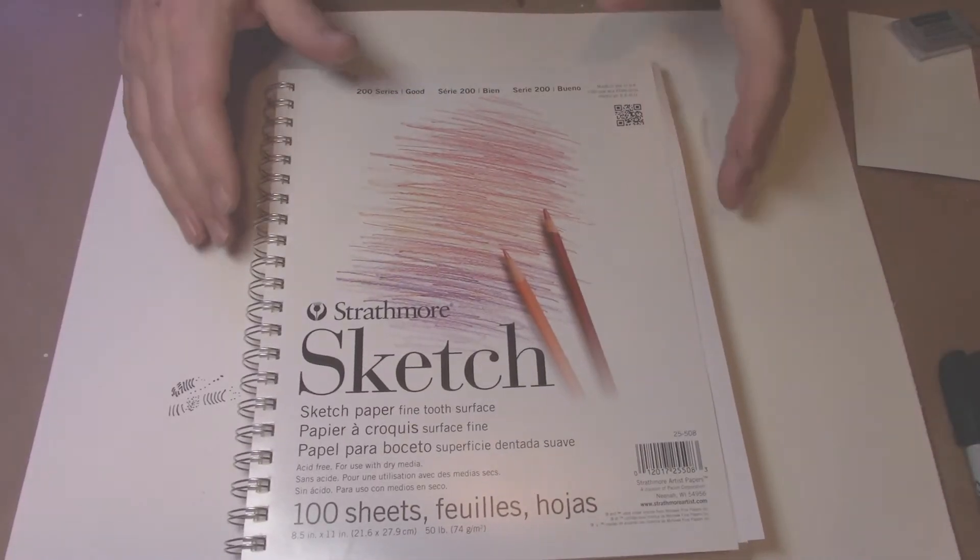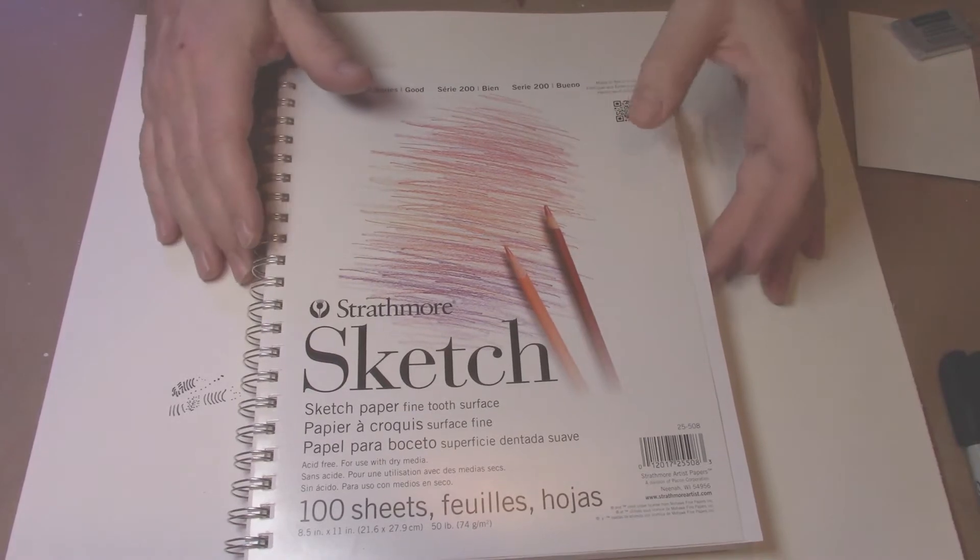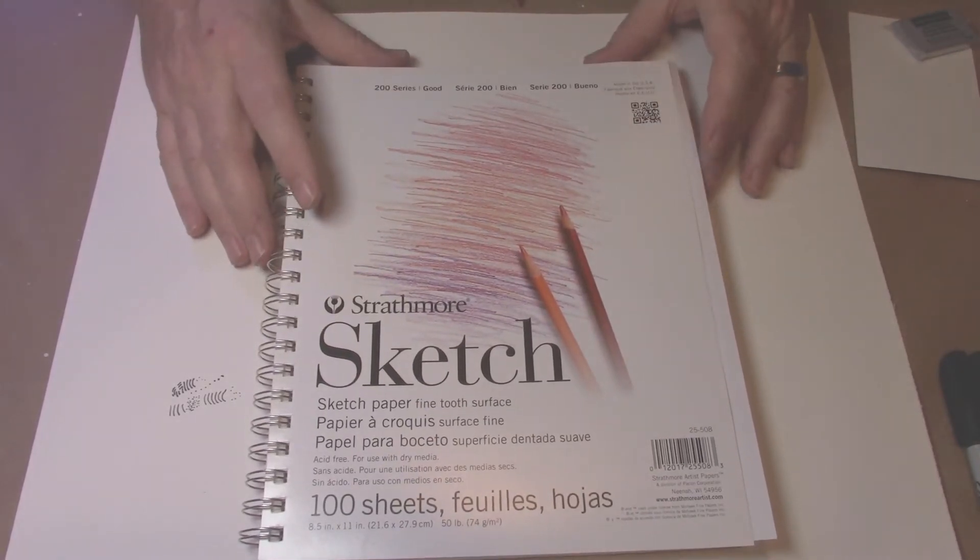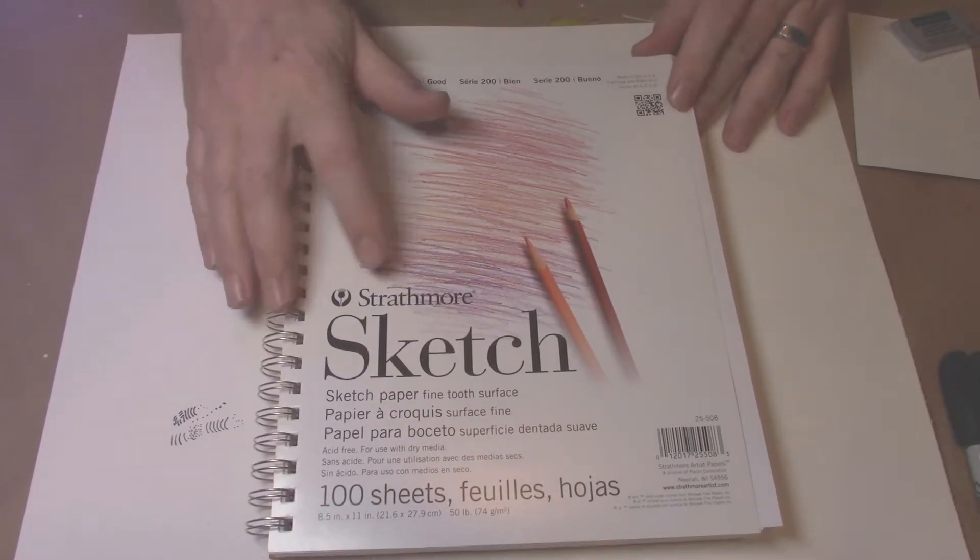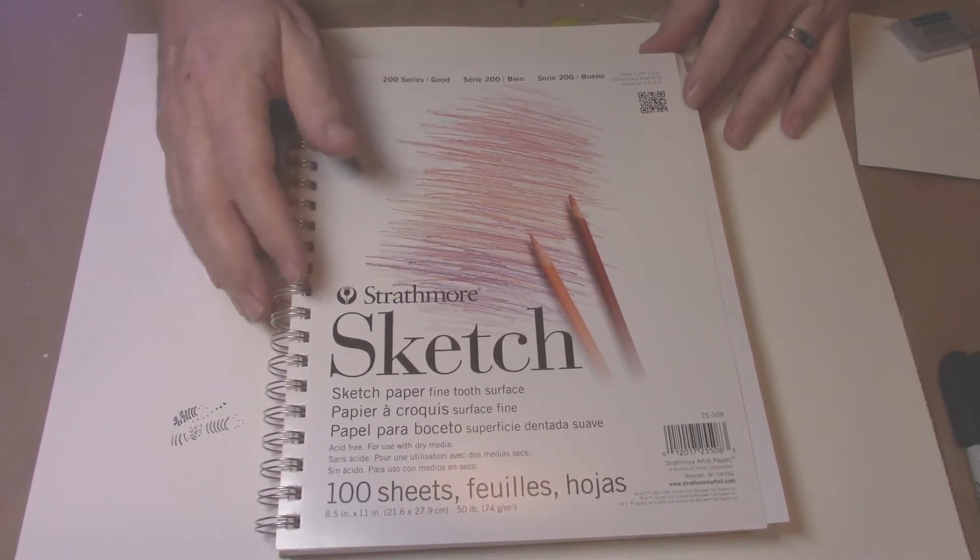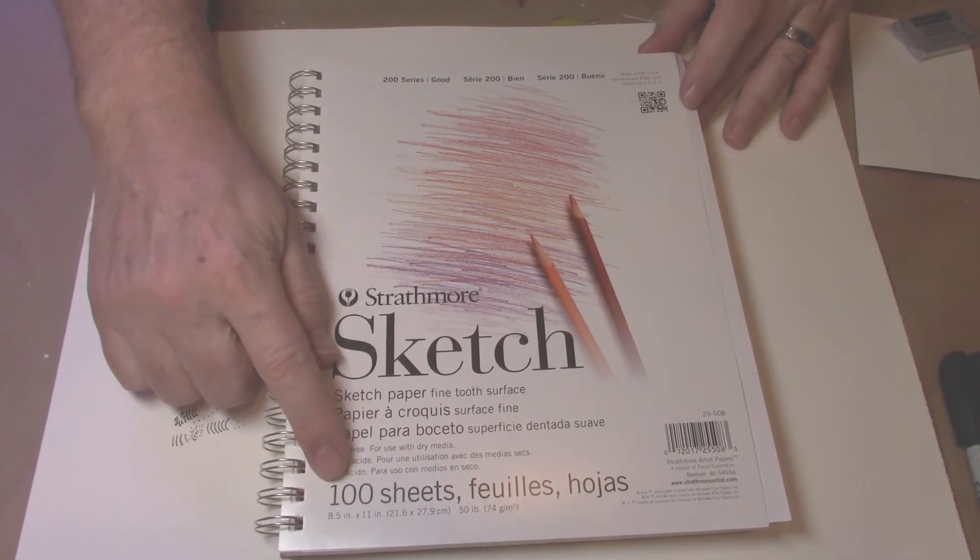The first item that you're going to need for this course is the sketchbook. This is probably the most expensive thing that you'll need to buy. This is Strathmore. It doesn't have to be this brand necessarily. It doesn't have to have 100 pages, but at least 50.